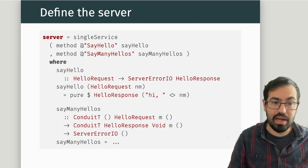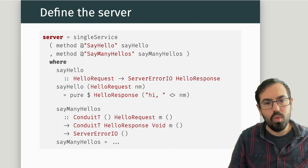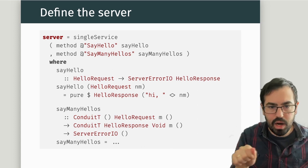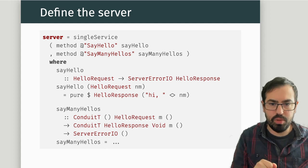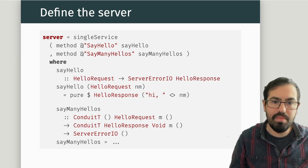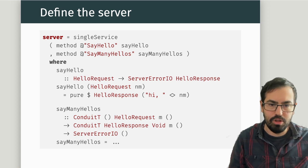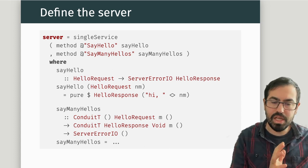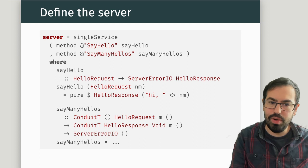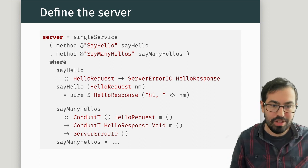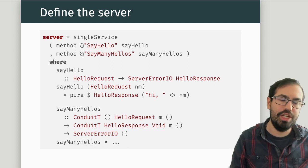Another difference is that when you define a service, you have to say what is the relation between each function and the name in the original protocol buffers file. This is something you didn't have to do in Servant, and we'll look at why you have to do it in one place and not the other, and what the trade-offs are.